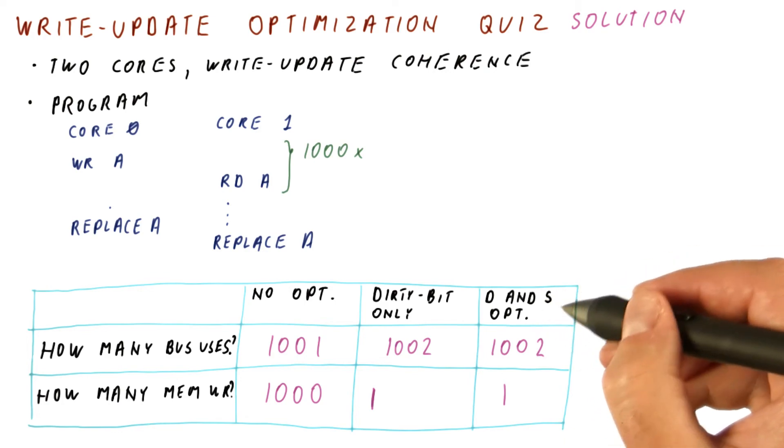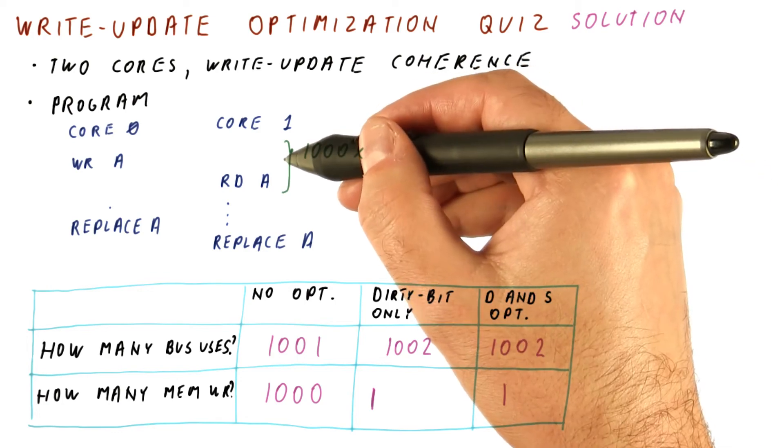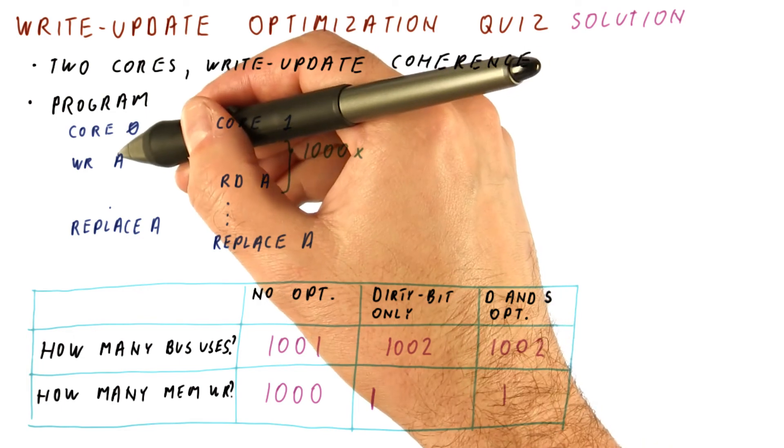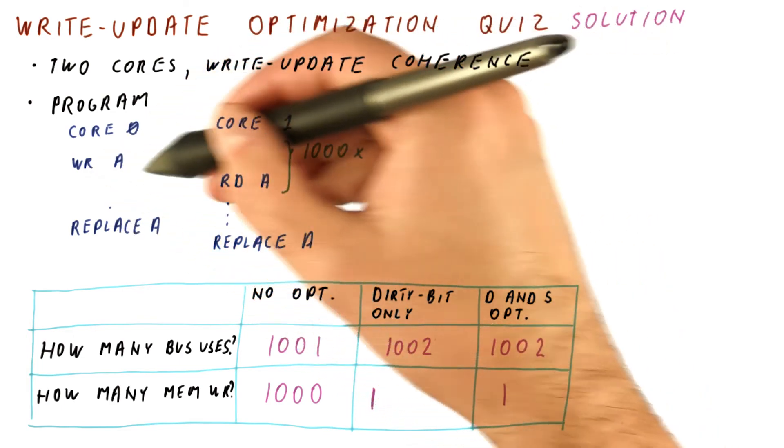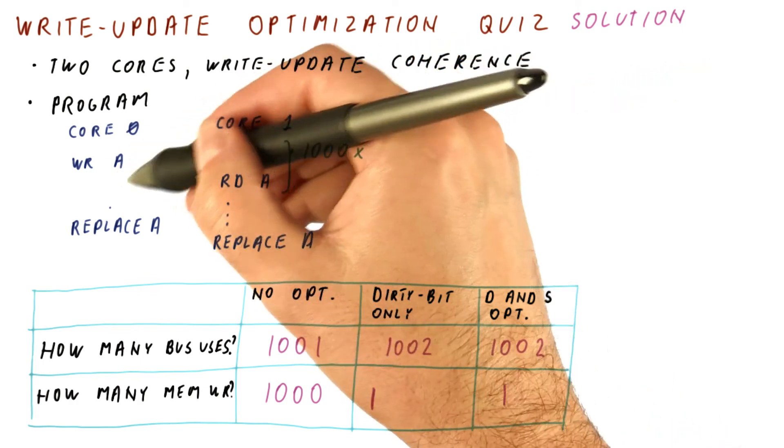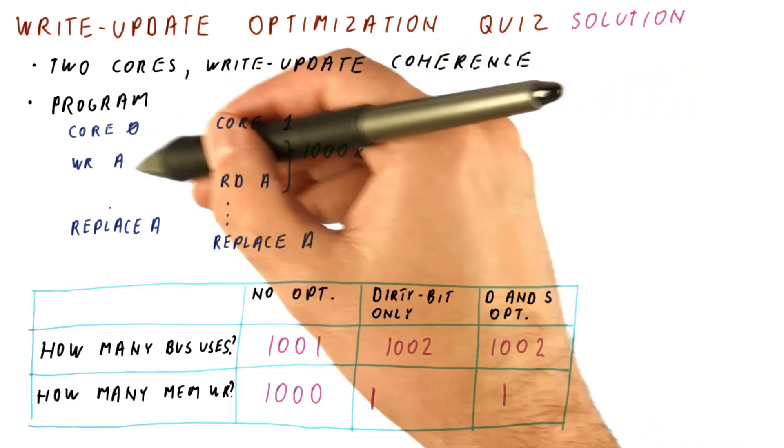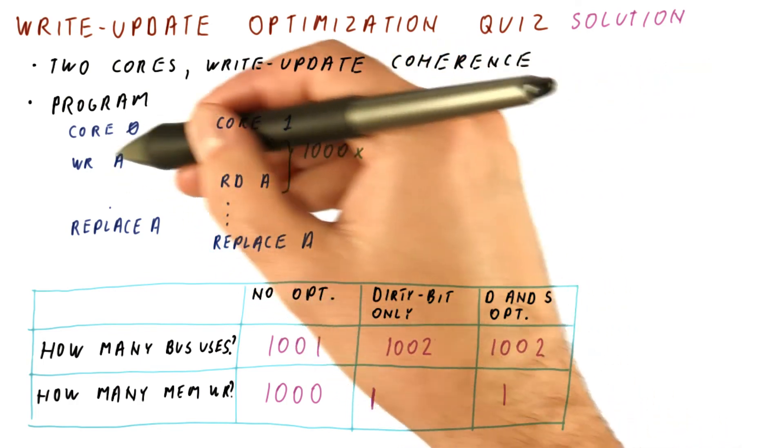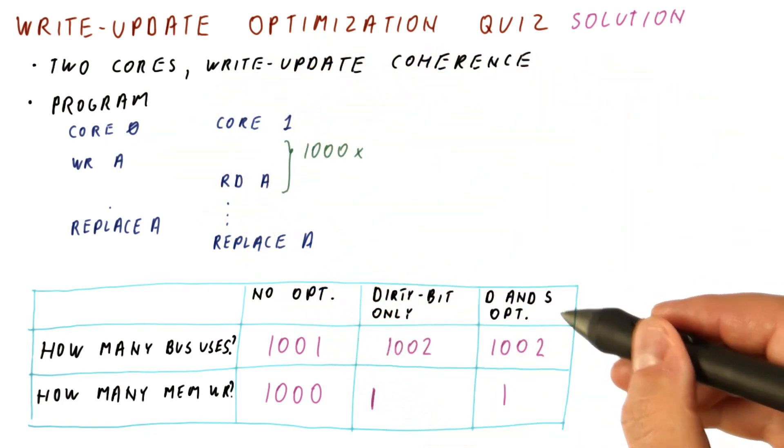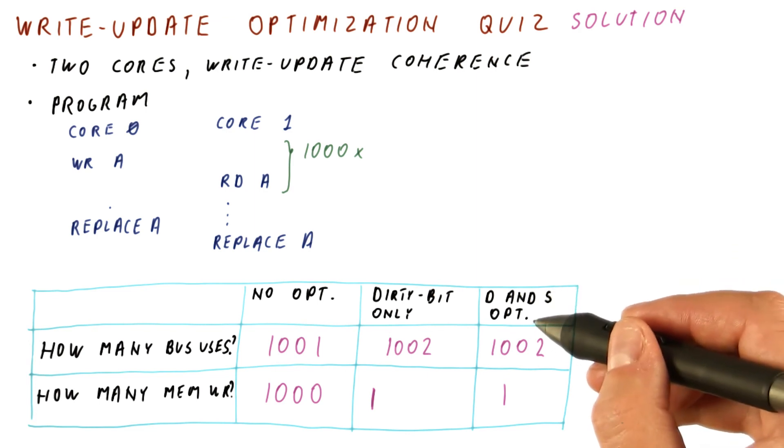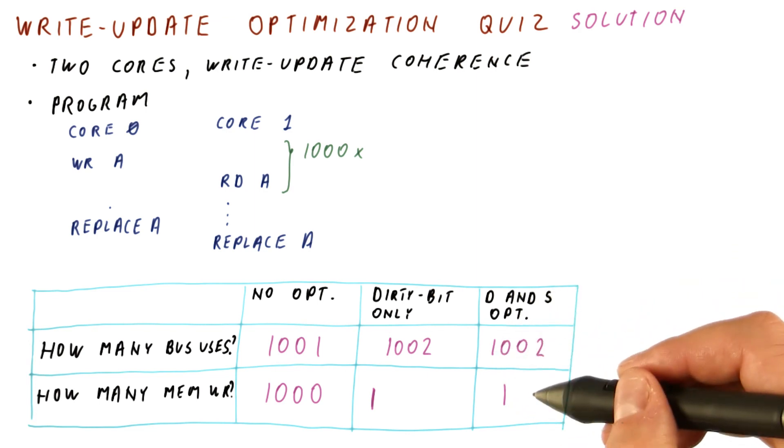Remember that the sharing optimization only works when we are accessing a block only on one core. This block is actually being read on one core, written on another. So all the writes on this core need to be propagated to the bus, so that this core's cache can be updated. So really, here, the shared bit optimization doesn't result in any savings.